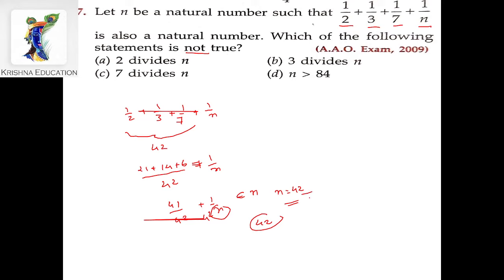Now we check if 3 divides n. Since 42 divided by 3 equals 14, this is also correct.